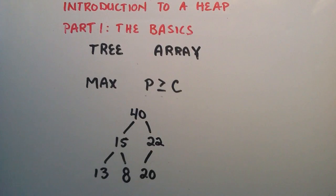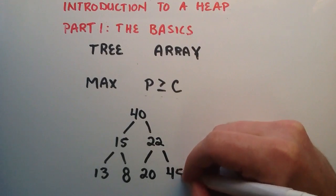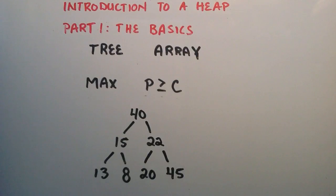So if we needed to add another item to the heap, let's say we need to add the value 45, we have to add it in the left most available spot. So the left most available spot would be right here. So we would add it there to keep our structure correct. But now our max heap condition is not met.